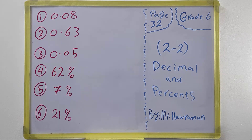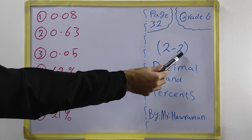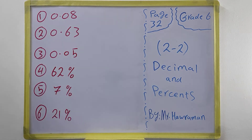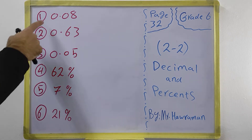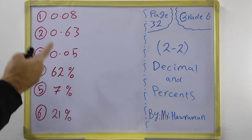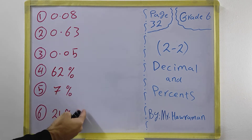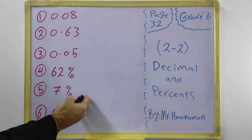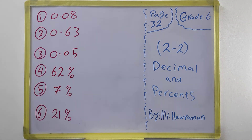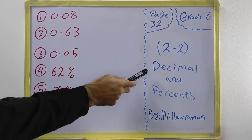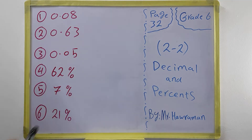Hi everyone. In this video we have grade 6, page 32, section 2.2: decimals and percent. We talk about these numbers — how we can change a decimal into a percent and how we can change a percent into a decimal, changing between these two forms.